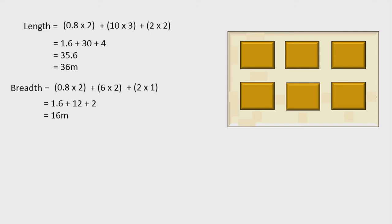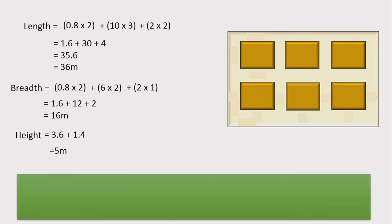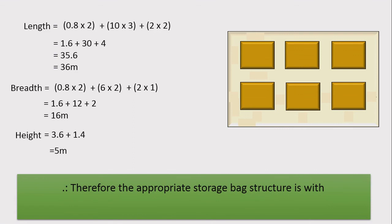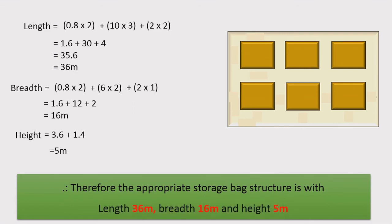The height is 3.6 meters (the height of the stack) plus additional clearance space between the stack and the roof. Rounding to a whole number, this gives a height of 5 meters. Therefore, the appropriate storage structure dimensions are: length 36 meters, breadth 16 meters, and height 5 meters.